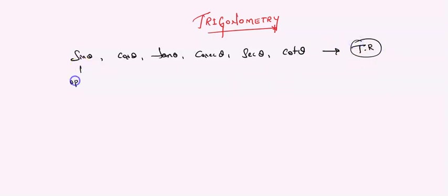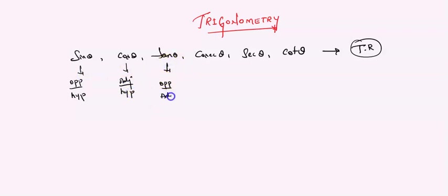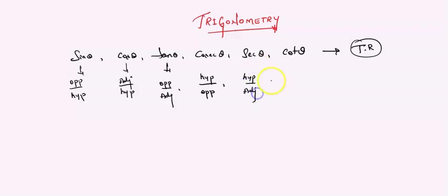What is sin theta? It is opposite by hypotenuse. Cos theta is adjacent by hypotenuse. Tan theta is opposite by adjacent. Cosecant theta is hypotenuse by opposite. Secant theta is hypotenuse by adjacent. Cot theta is adjacent by opposite.